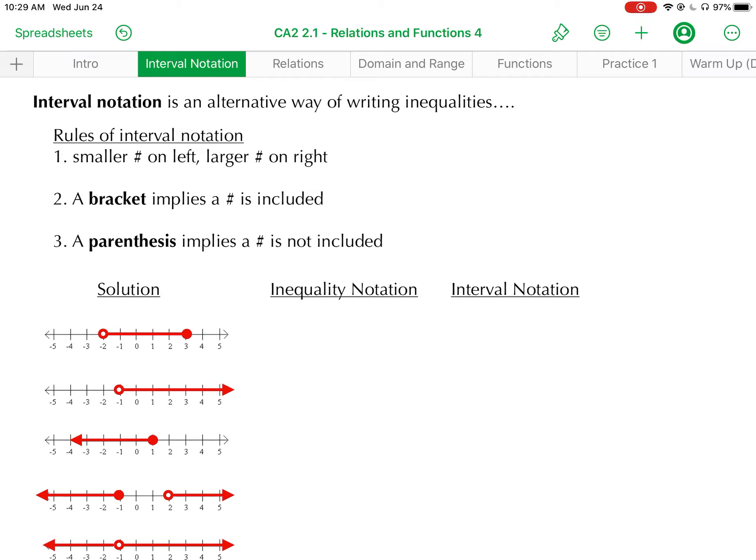There's a couple rules that we follow for interval notation. The first is that you always put your smaller number on the left, followed by a comma, and then your larger number on the right. Now, if you want to include either of those numbers in your solution set, you're going to put a bracket next to it. But if you don't want to include it, you're going to put a parenthesis next to it. So bracket implies including, parenthesis implies not including.